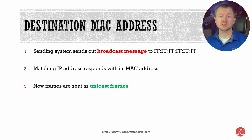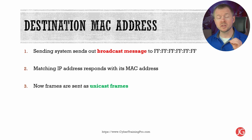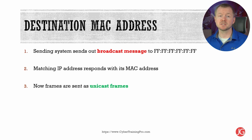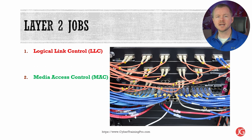All the systems on the network will see that broadcast message and process it, and then the system with the correct IP address is going to respond with its MAC address. Now that we know the destination MAC address, when we send our first frame it's going to be using a unicast frame, meaning we're sending it to a specific destination. This one-to-one addressing scheme is called unicast addressing.